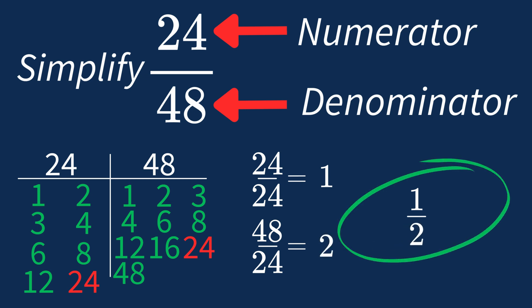And we know that 1 over 2 is in its simplest form, because the only common factor between 1 and 2 is 1. And when 1 is the largest common factor, we know that our fraction has been simplified.